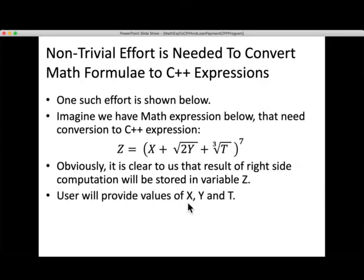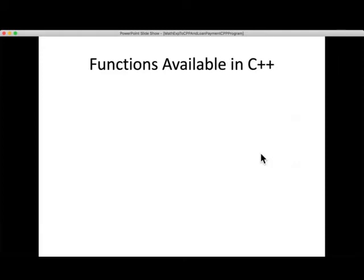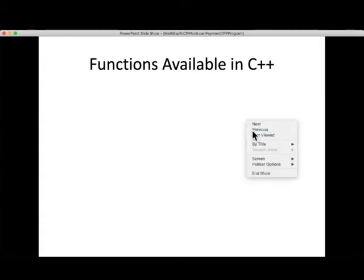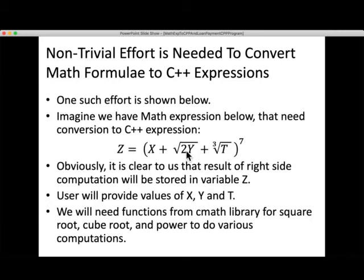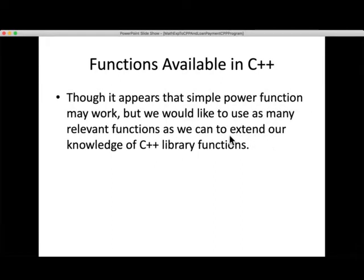Obviously it is clear to us that the result of the right side computation will be stored in variable Z. The computer will compute this entire right-hand side first. Whatever the computation result value is will be stored in Z. The computer will require values of X, Y, and T before it can store into Z. Though it appears that a simple power function may work in all cases, I can take power 0.5, power 0.333, and then power 7, but doing that is not very elegant.